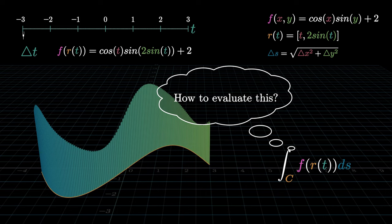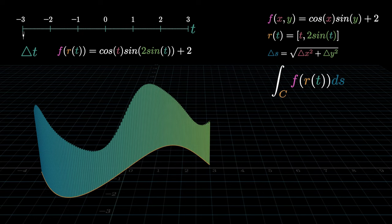Under these circumstances, integrating with respect to t seems to be a promising idea. And for good reasons. We already have the range of values for t which can potentially be the integration limits. Also, the function representing the heights of the rectangles is already in terms of t.